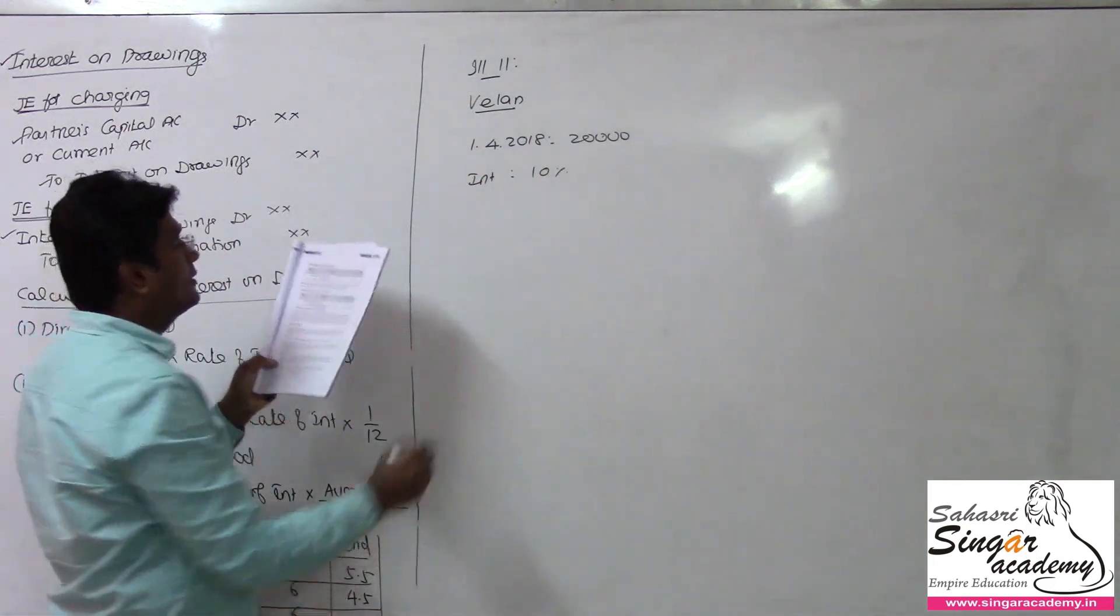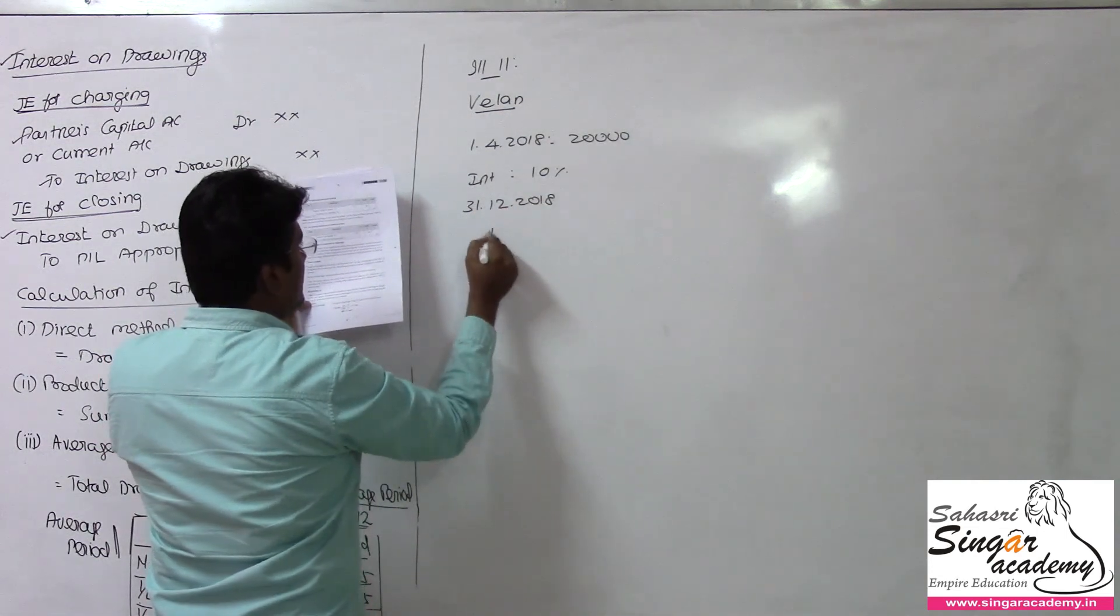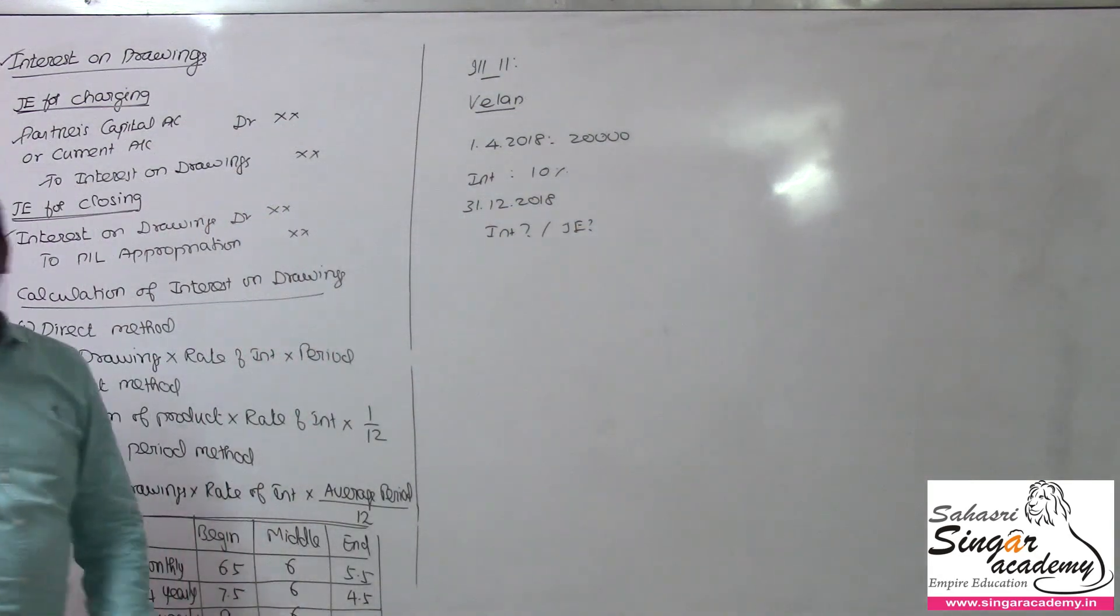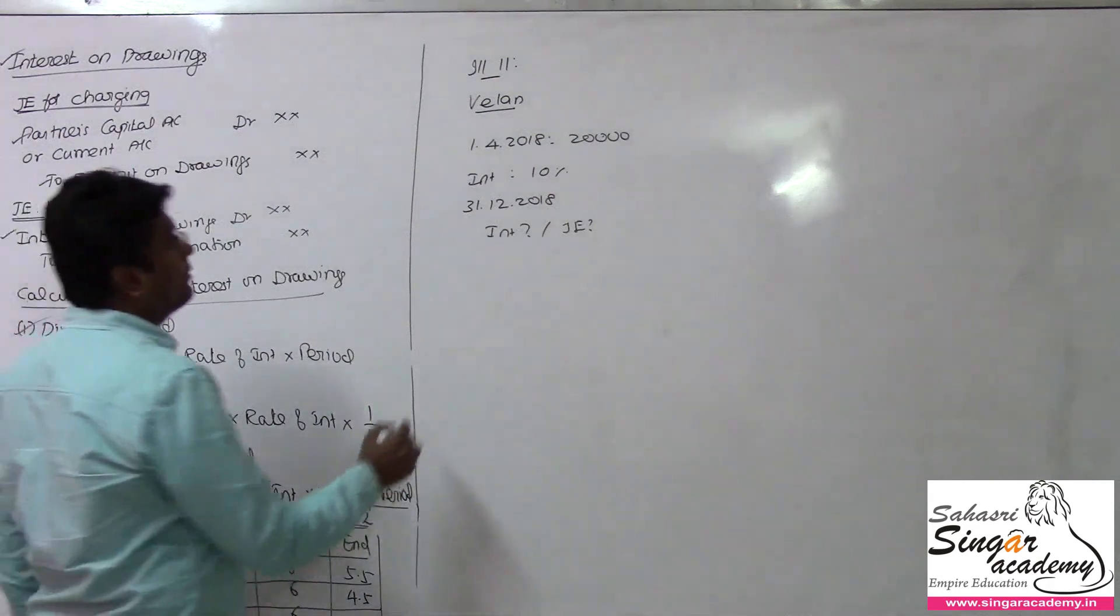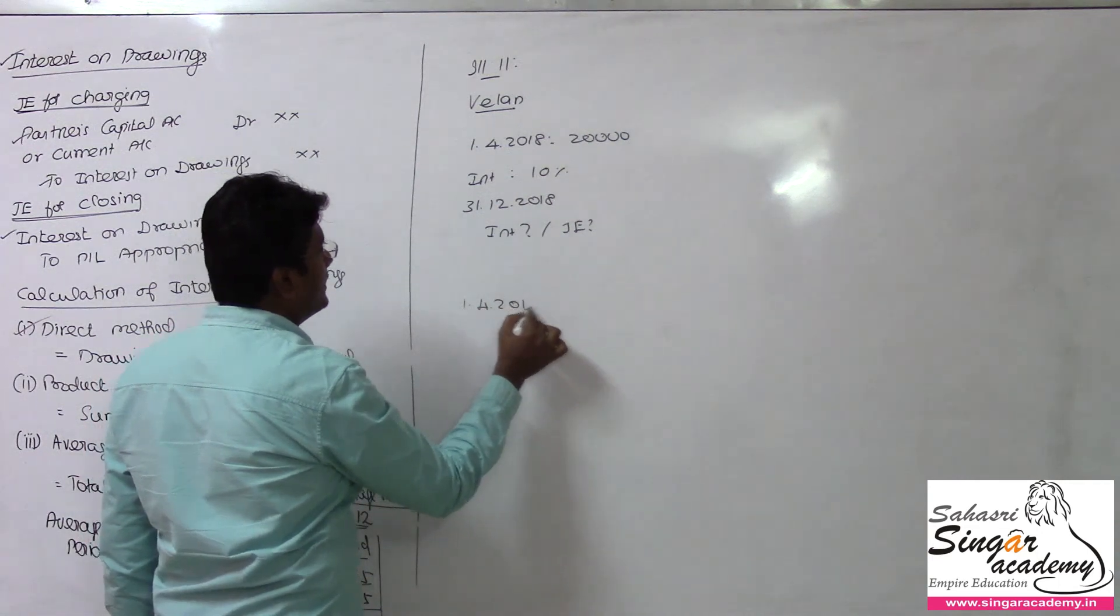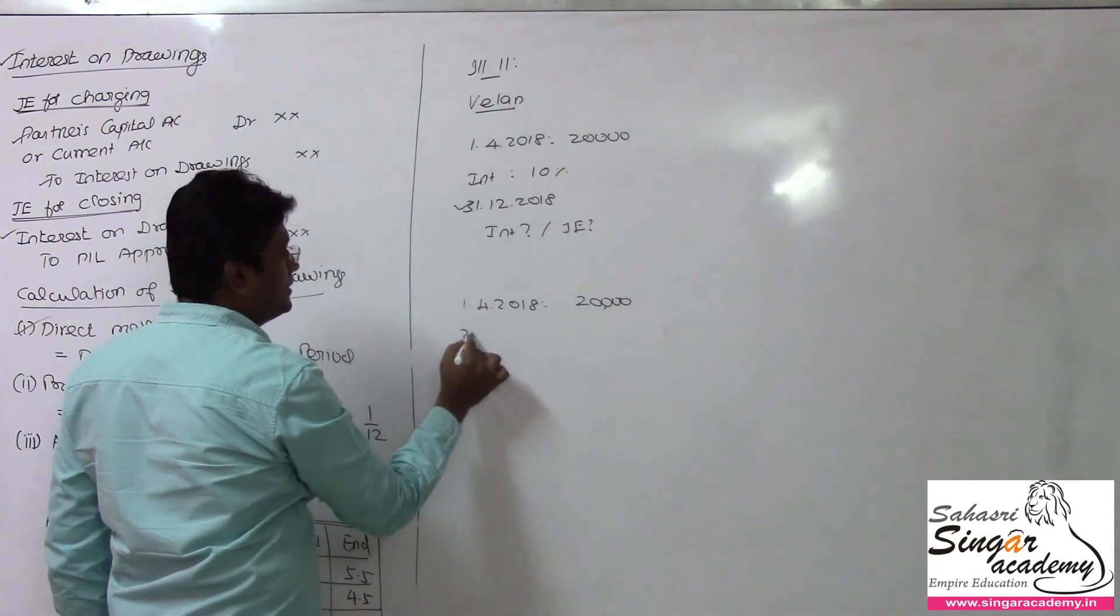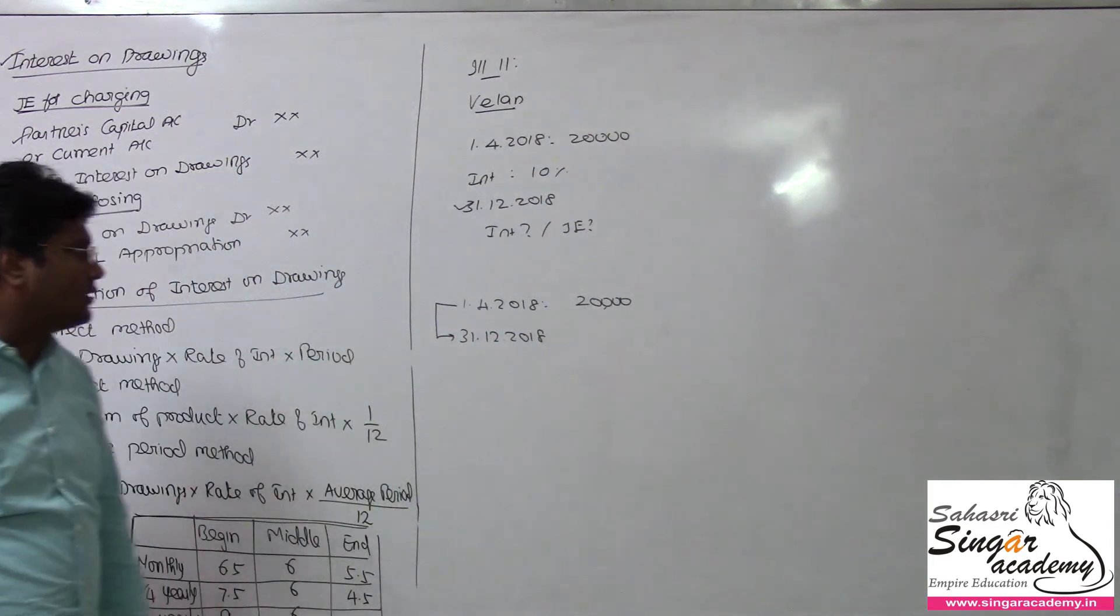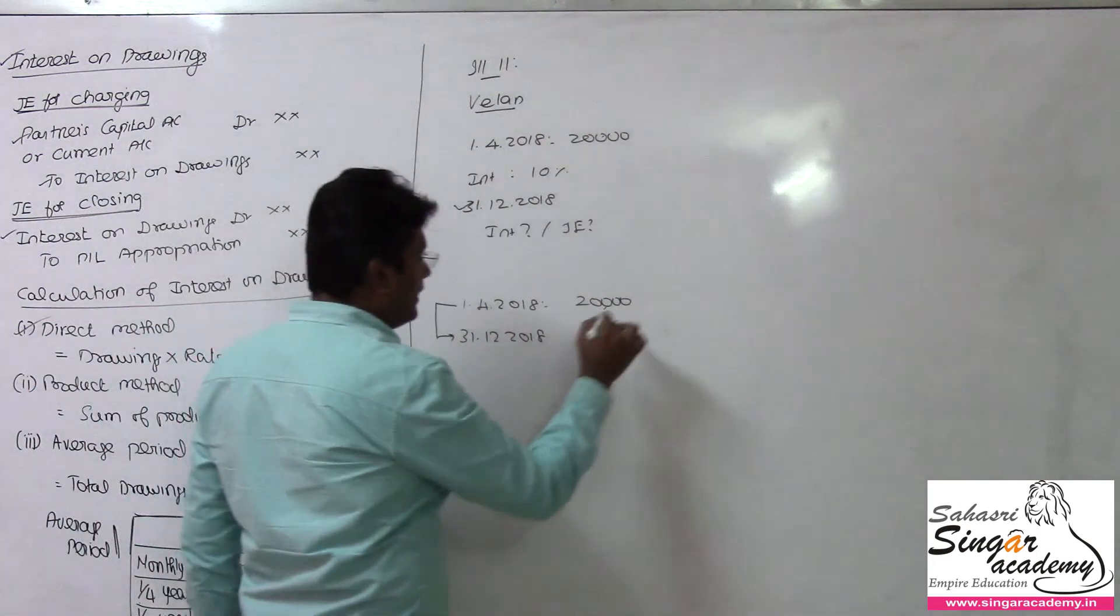Calculate interest on drawings on 31st December 2018. Withdrawal is 20,000 on 1st April 2018, and the year's close is 31st December 2018.